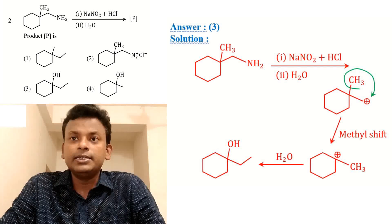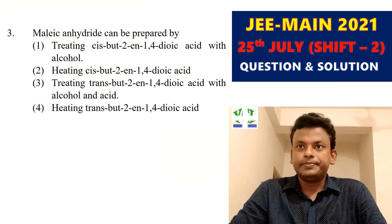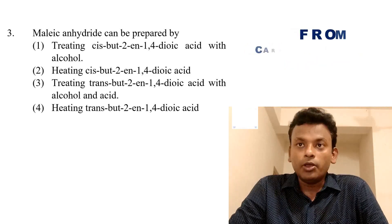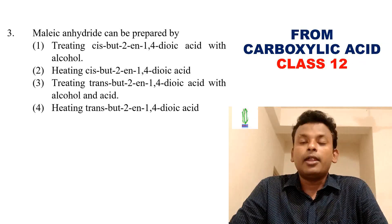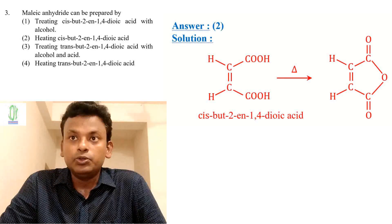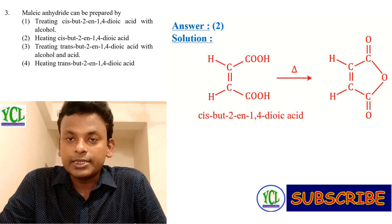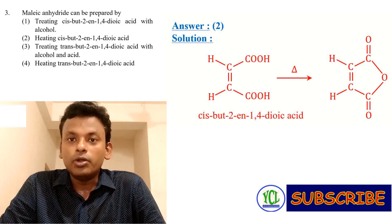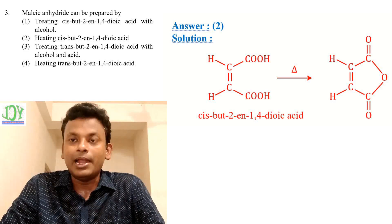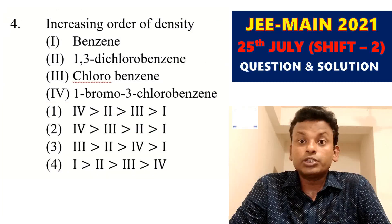So the answer is 3. Question number 3: Maleic anhydride can be prepared by which of the following options? The answer is option 2 — heating cis-butenedioic acid (maleic acid). So answer is 2 for the preparation of maleic anhydride. Next, question number 4.